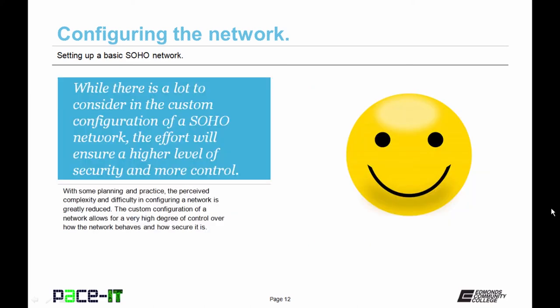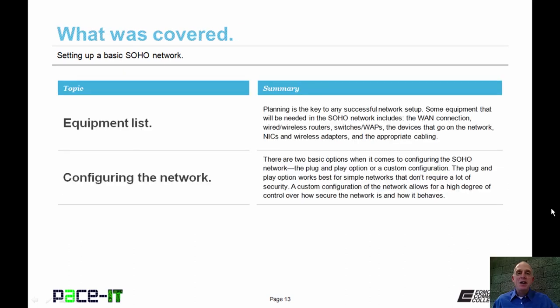While there is a lot to consider in the custom configuration of a SOHO network, the effort will ensure a higher level of security and more control. With some planning and practice, the perceived complexity and difficulty in the configuration of a network is greatly reduced. The custom configuration of a network allows for a very high degree of control over how the network behaves and how secure it is. That concludes this session on setting up a basic SOHO network. We talked about your equipment list and then configuring the network. On behalf of Pace IT, thank you for watching this session.